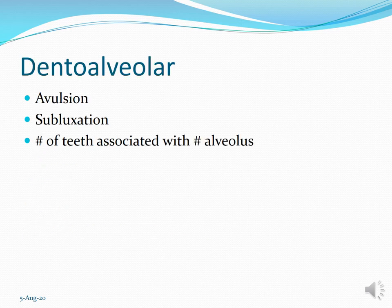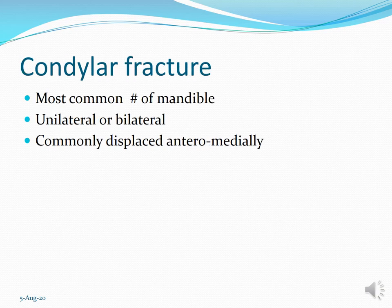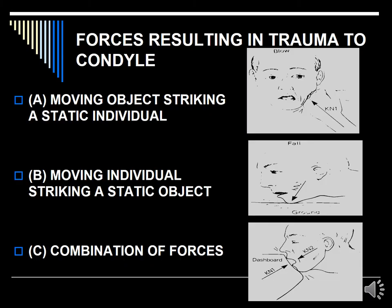Dental alveolar fracture is associated with avulsion — the popping of teeth out of the socket — subluxation in which the tooth becomes loosened in the socket, and fracture of the teeth associated with the alveolus. Condylar fracture is the most common fracture; it can happen as unilateral or bilateral, and the commonly displaced side is the anteromedial side because of the pull of the lateral pterygoid. Forces resulting in trauma to the mandible can be either a moving object striking a stationary individual, a moving individual striking a static object, or a combination of both.